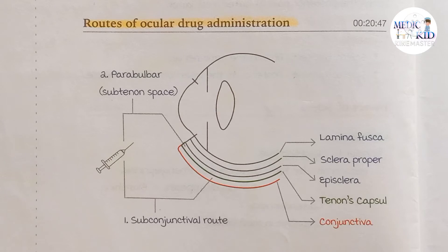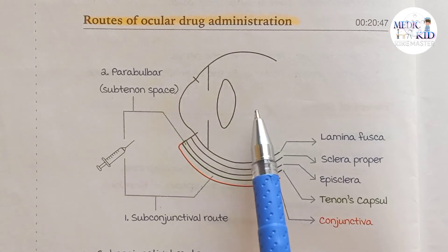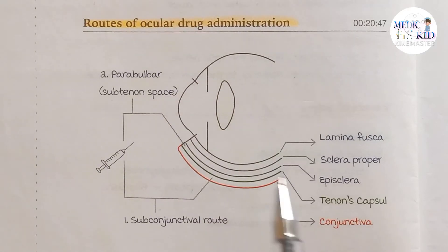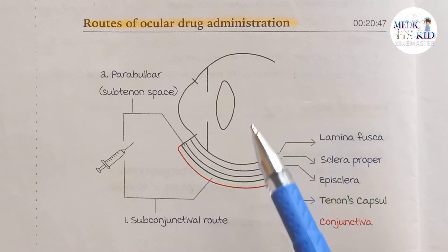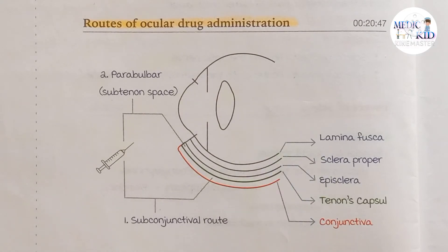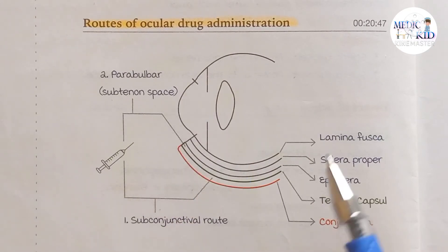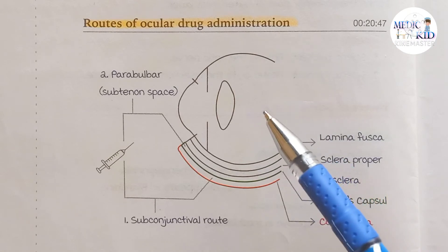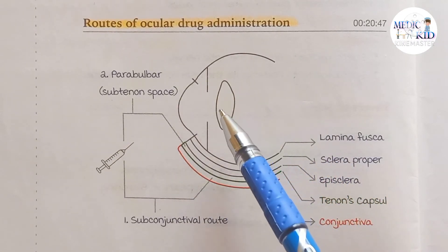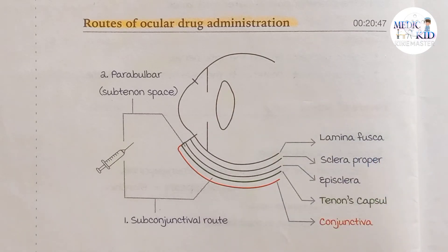If the pathology is in the vitreous, we give a drug or injection directly into the vitreous, which is known as the intravitreal route. If there is a pathology of the anterior segment or anterior chamber, we give a drug or injection into the anterior chamber, which is known as an intracameral injection. In some cases of surgery, local or general anesthesia is administered around or behind the bulb.